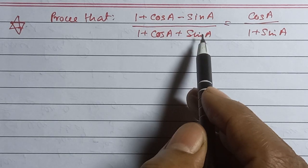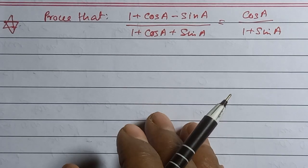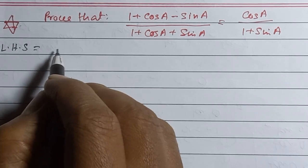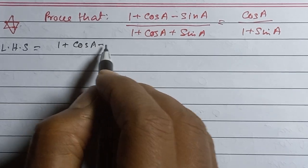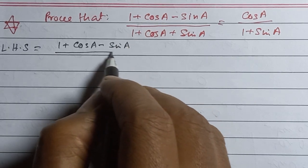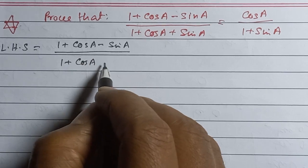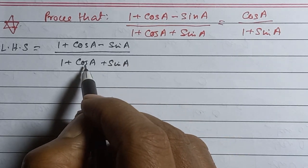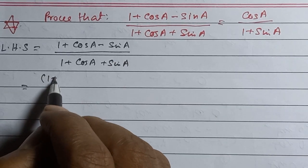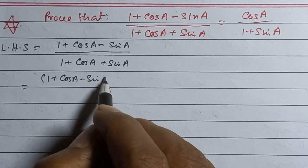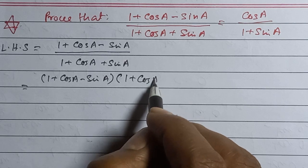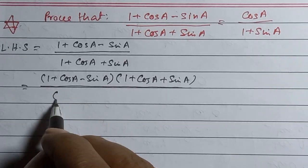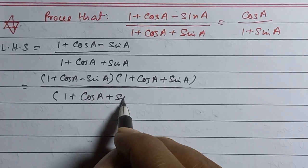We will start with the left hand side. The left hand side equals (1 + cosA - sinA) / (1 + cosA + sinA). The left hand side equals 1 + cosA + sinA.